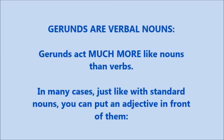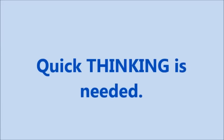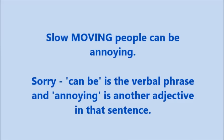You can put an adjective in front of them. For example: 'Quick thinking is needed.' Quick is the adjective, thinking is the gerund, and 'is needed' is the verbal phrase. Another example: 'Slow moving people can be annoying.' Slow is the adjective, moving is the gerund, and 'can be annoying' is the verbal phrase.